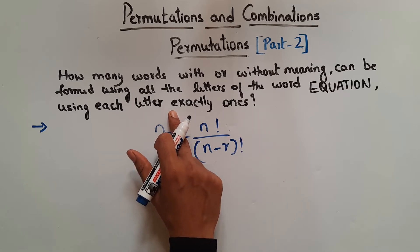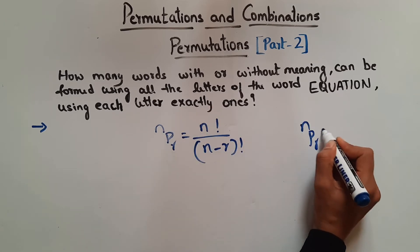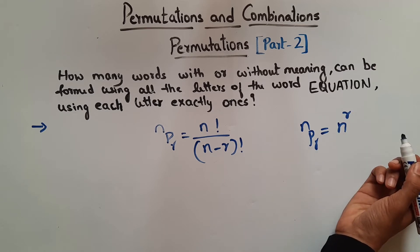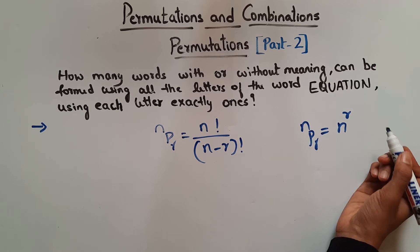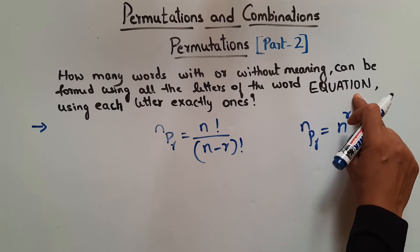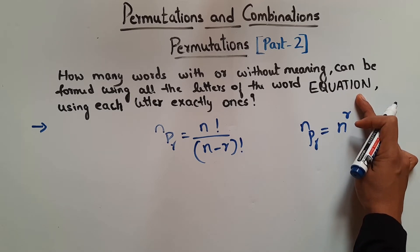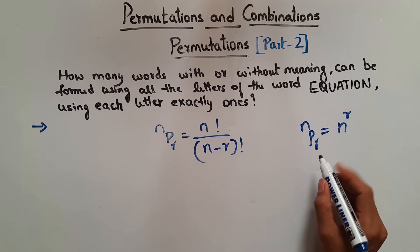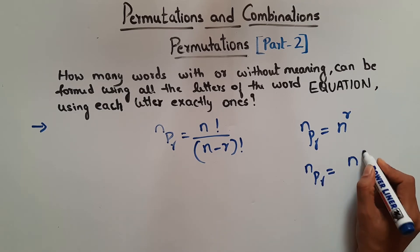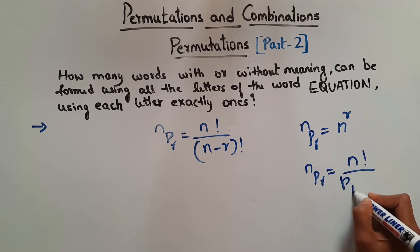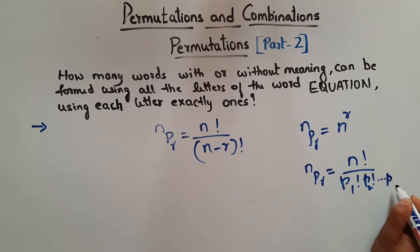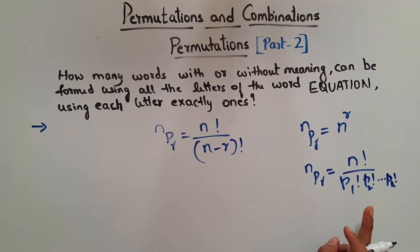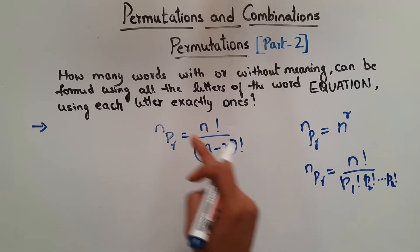If repetition was allowed, then we know NPR is given by N power R. This we have seen. And if in case the given word is not a distinct object — say for example INSTITUTE, we have I repeating there — in that case we know NPR is given by N factorial divided by P1 factorial, P2 factorial and so on up to Pk factorial. This also we have seen. If you haven't seen this, just watch the previous video where I have explained all about this.